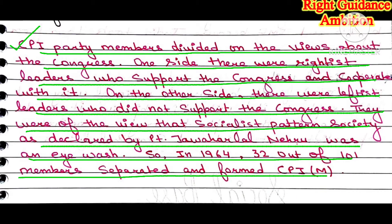The CPI party members had different views toward Congress. On one side, the rightist leaders were supporting Congress and cooperating with its policies. On the other side, the leftist members were of the view that the socialist pattern society declared by Pandit Jawaharlal Nehru was an eyewash — not making any real socialist or welfare policies. So in 1964, 32 out of 101 members separated and formed CPIM. M means Marxist.